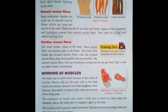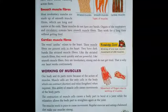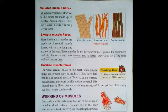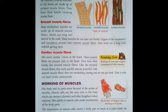Most involuntary muscles are made up of smooth muscle fibers, which are long and narrow at the ends, as you can see in this picture. These muscles do not have any bands. Organs of the respiratory and circulatory systems have smooth muscle fibers. They work for a long time without getting tired.